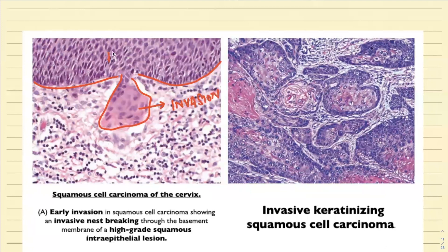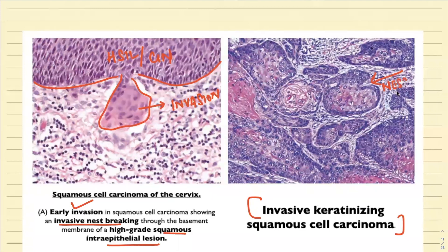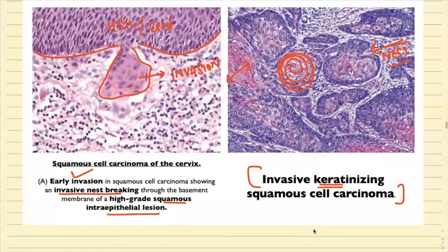This was basically an HSIL — a carcinoma in situ — and we can appreciate the invasion of the cervical stroma. There is an early invasion showing an invasive nest breaking through the basement membrane of the high-grade squamous cell intraepithelial lesion. This is your invasive keratinizing squamous cell carcinoma — you can see nests of malignant squamous epithelial cells showing the characteristic squamous pearl with keratinization present.